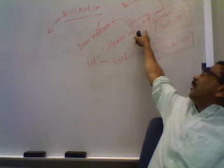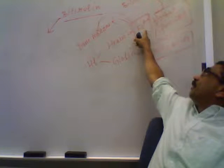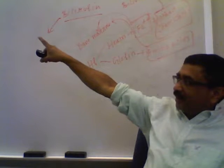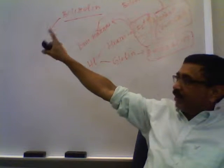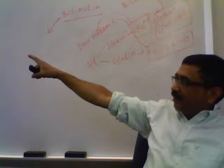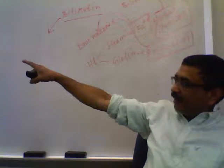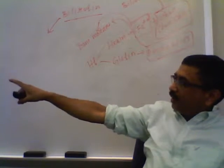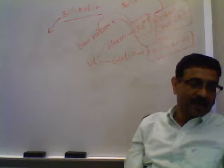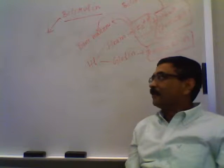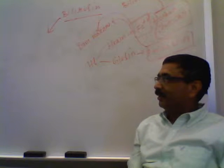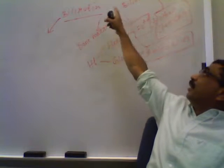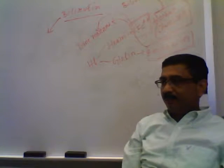Heme has an iron atom in the center and other chemicals around. The iron will go back to the bone marrow, but other chemicals will be converted to biliverdin and then to bilirubin.